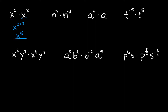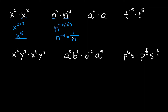Same thing over here: n to the seventh times n to the negative 11. You have an n here and an n here, so we keep the n and then add the two exponents together. So 7 plus negative 11 gives us n to the negative 4. If you have a negative exponent, you can rewrite your answer as a fraction — put the base in the denominator and the exponent turns positive. So n to the negative 4 can be written as 1 over n to the positive 4.